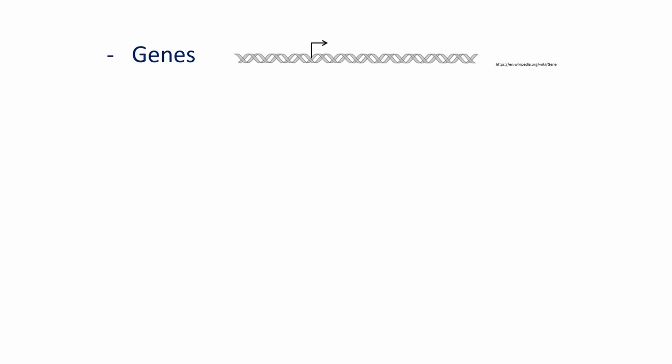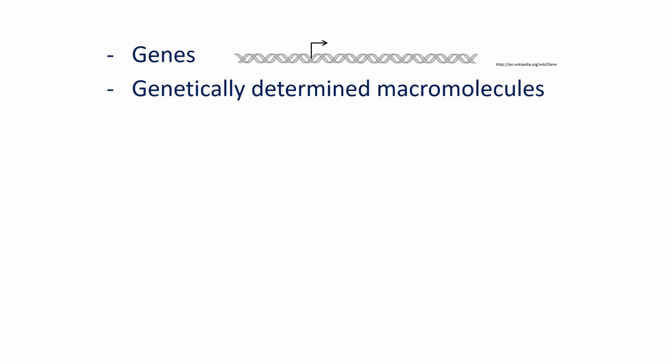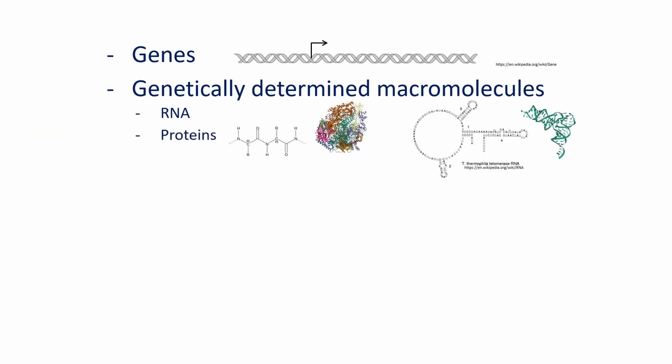Different are those macromolecules that are defined or encoded by genes, RNA or protein molecules. Other macromolecules are not directly defined by genes, although they are built by gene encoded proteins, which are enzymes. Here we have the carbohydrates, which are also biopolymers, and or lipids.